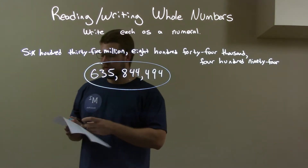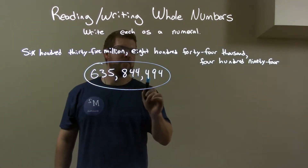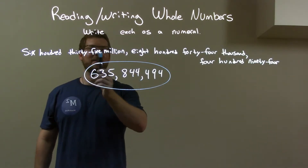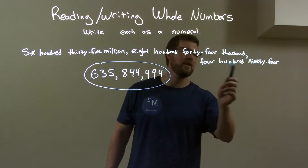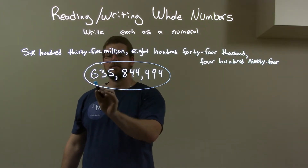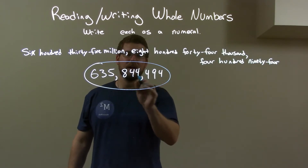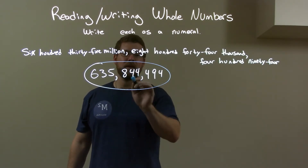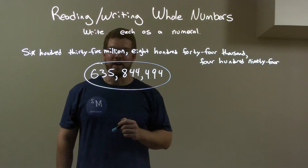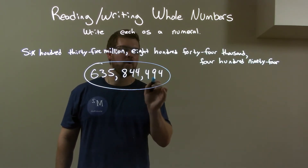So, quick recap: we have six hundred thirty-five million right here, then eight hundred forty-four thousand four hundred ninety-four. Six hundred thirty-five goes in the millions area — six spaces afterwards. Then eight hundred forty-four thousand — three spaces afterwards. Then four hundred ninety-four. Our final answer is six hundred thirty-five million, eight hundred forty-four thousand, four hundred ninety-four.